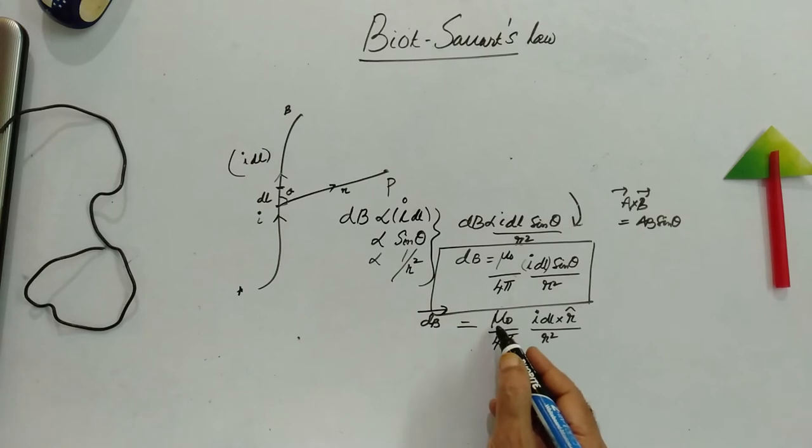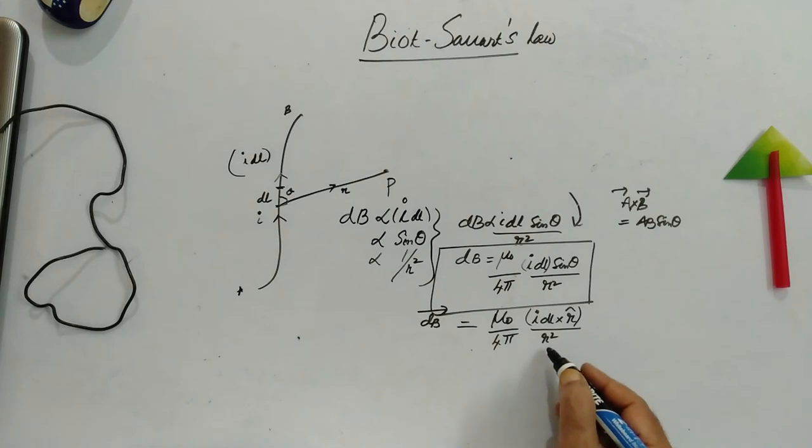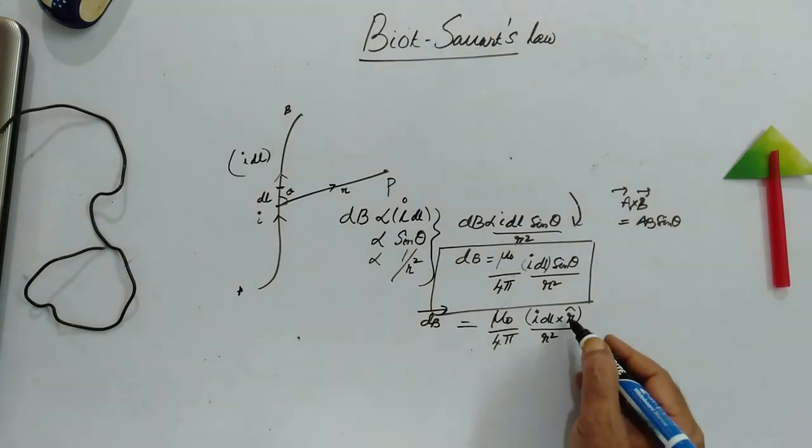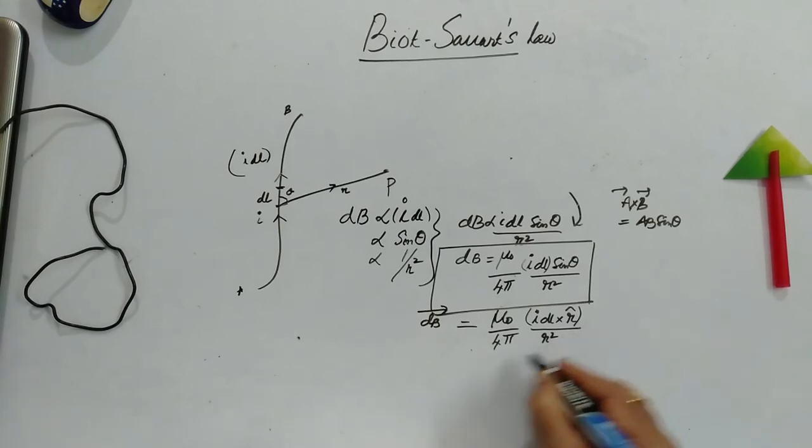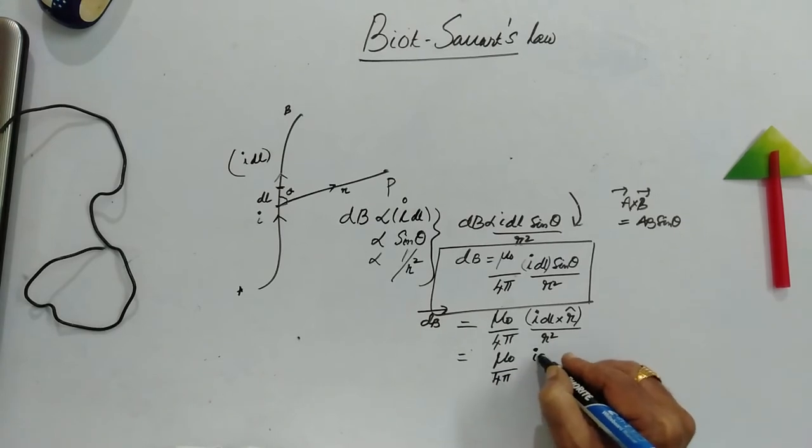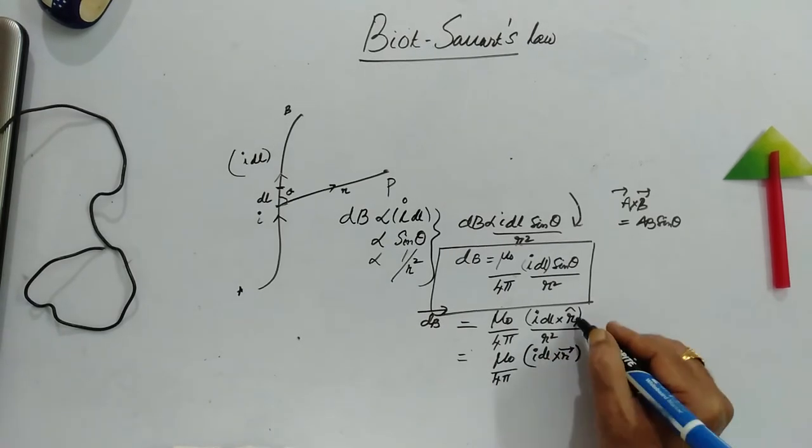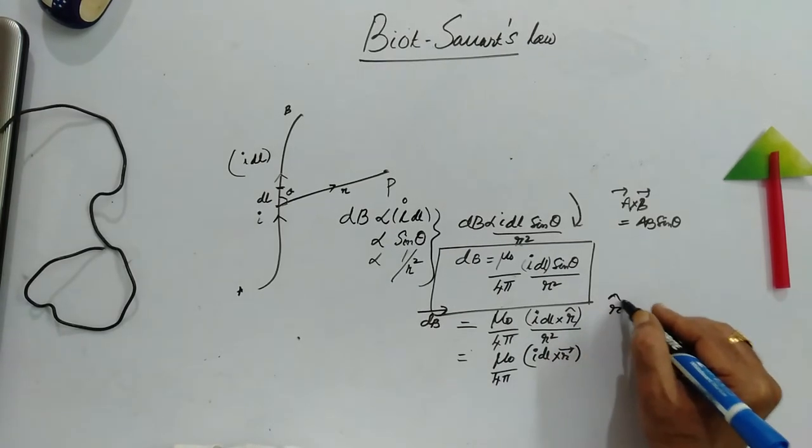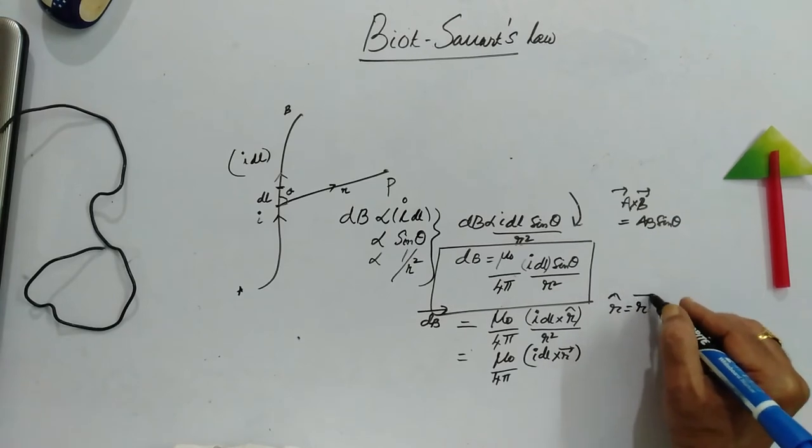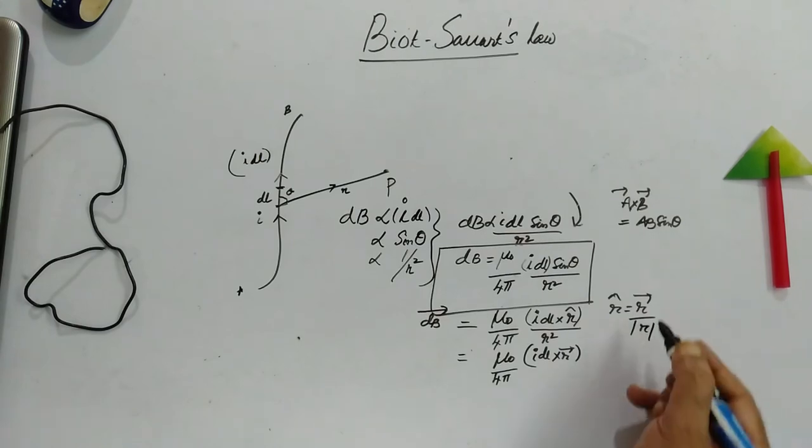R square of R. So mu naught by 4 pi, I dL cross R by R square. If you write R bar, then it becomes mu naught by 4 pi, I dL cross R bar.